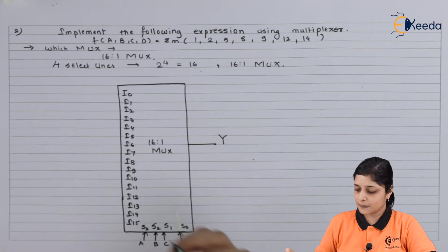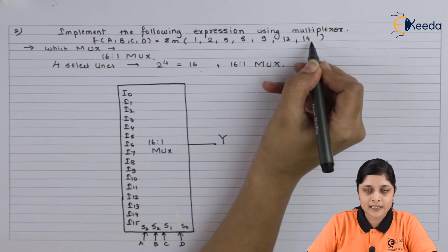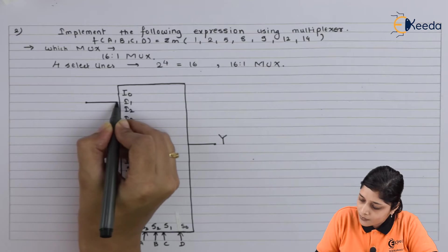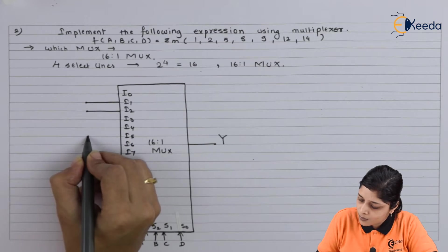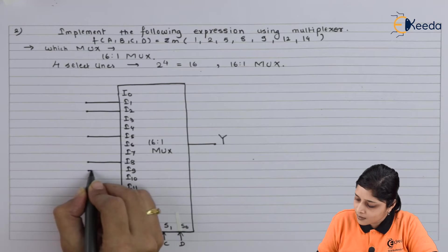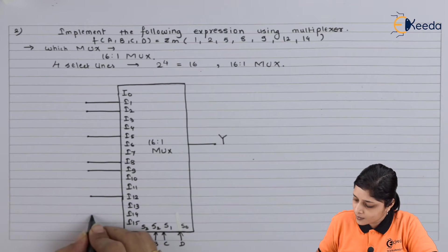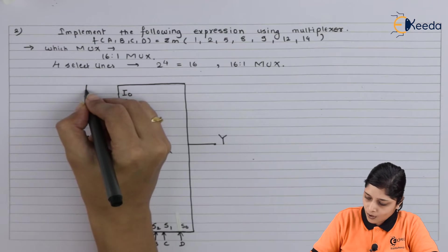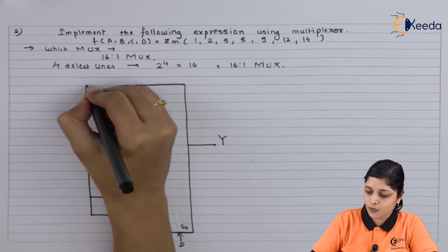Now you have to connect all the minterms present in the expression to logic 1. So we connect I1, I2, I5, I8, I9, I12, and I14 — all these inputs are connected to logic 1.